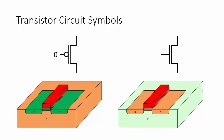connecting the source and drain, whereas for the NMOS transistor, a high voltage or logic 1 turns on the device.